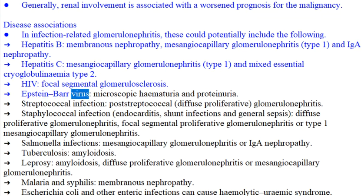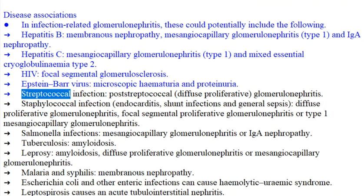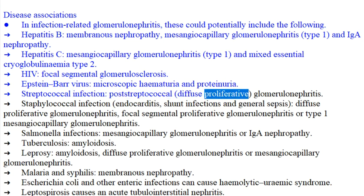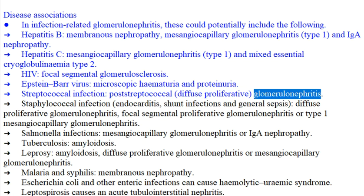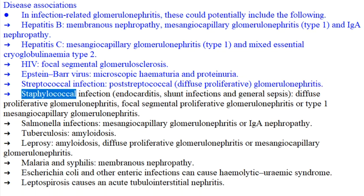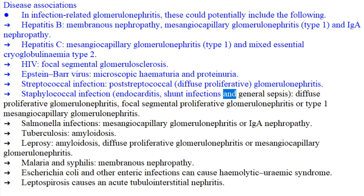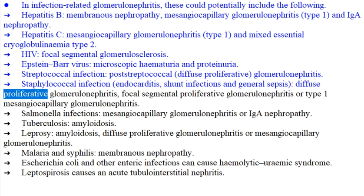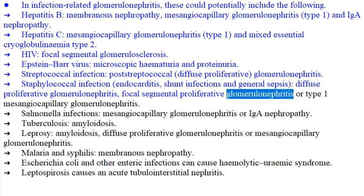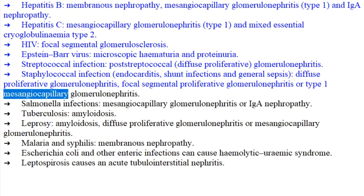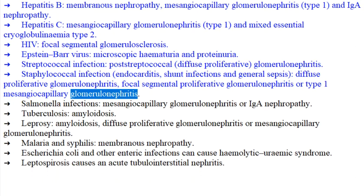Epstein-Barr virus: microscopic hematuria and proteinuria. Streptococcal infection: post-streptococcal diffuse proliferative glomerulonephritis. Staphylococcal infection, endocarditis, shunt infections, and general sepsis: diffuse proliferative glomerulonephritis, focal-segmental proliferative glomerulonephritis, or type 1 mesangiocapillary glomerulonephritis.